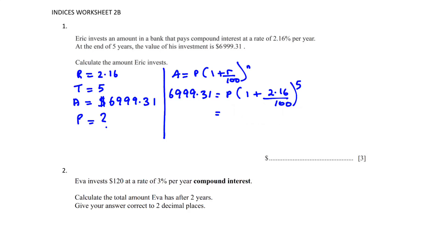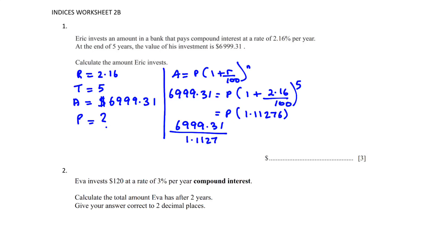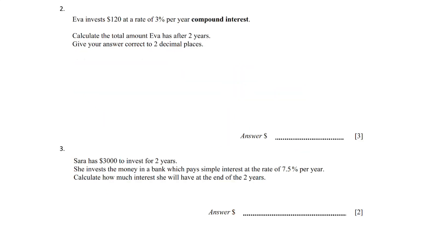Put this in the calculator and you get 1.11276. Always take as many digits as possible — if you round too early you may not get an accurate answer. This value is multiplied by P, so bringing it to the other side gives division: 6999.31 ÷ 1.11276 = $6,290.00. The final answer is $6,290.00.